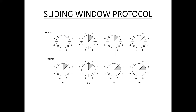Here the sender has a sending window and the receiver has a receiving window. The sender has sender windows 1, 2, 3, 4 and the receiver has receiving windows 1, 2, 3, 4. The circles represent windows. In one-bit sliding window protocol, the size of the window is one — sender window size is one and receiver window size is one.